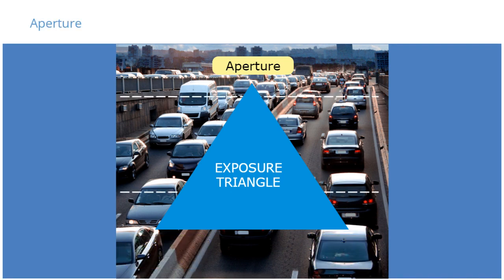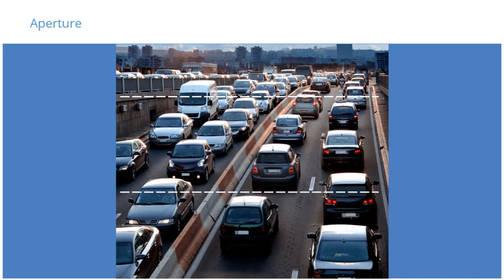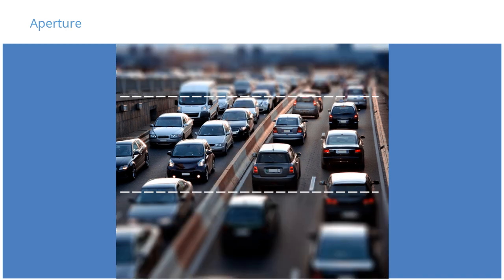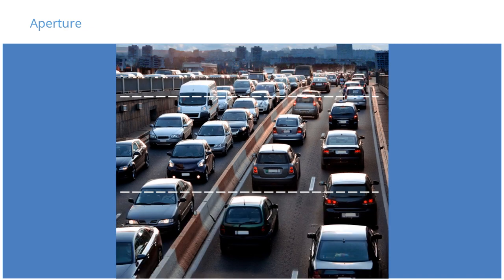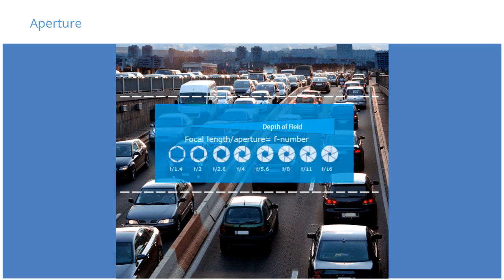Increasing the aperture — an adjustable hole through which light passes — allows more light to the sensor and reduces the depth of field. Reducing the aperture allows less light to the sensor but increases the depth of field. This seems somewhat counterintuitive, because as the f-stop decreases, the area of the opening increases.